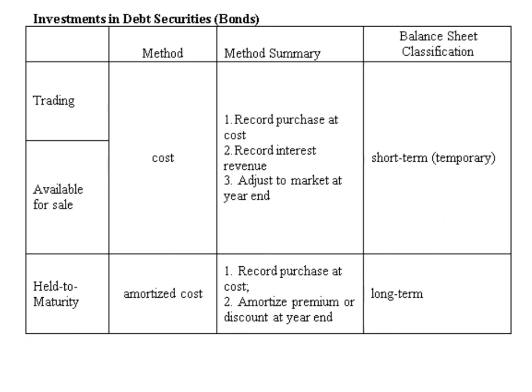Today I would like to discuss investment in debt securities, which are other companies' bonds. They are split into three large categories: trading, available for sale, or held to maturity. Since bonds are long-term, held to maturity will also be a long-term investment — longer than a year. We will not be discussing that category within this course, but I wanted to let you know it exists.